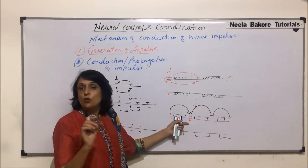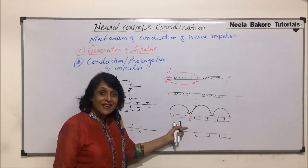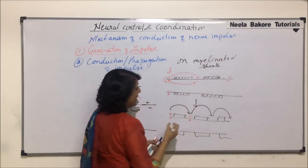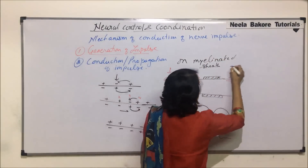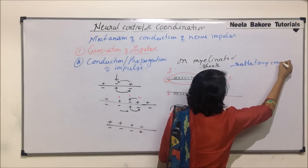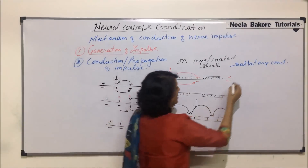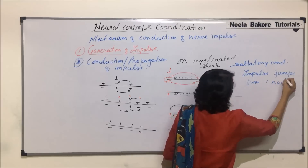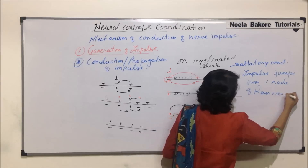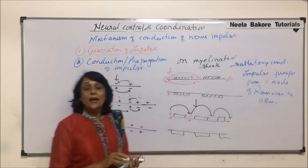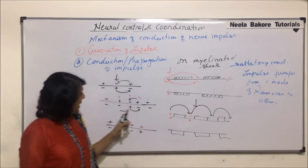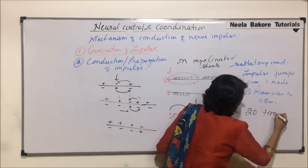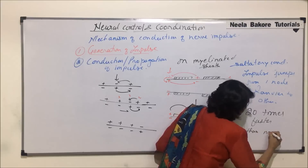Node is the area where there is no myelin sheath. Such kind of conduction, which takes place on a myelinated nerve, is known as saltatory conduction. The impulse jumps from one node of Ranvier to the next. This type of conduction is 20 times faster as compared to the conduction taking place on the non-myelinated nerve.